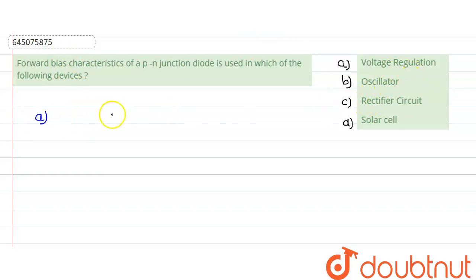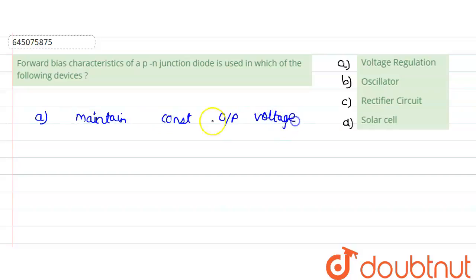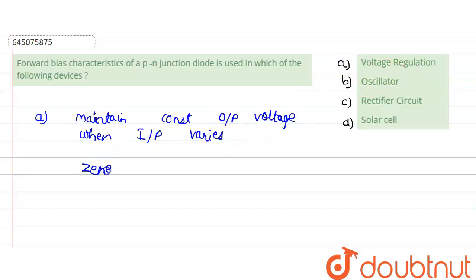Voltage regulation — from the word itself it is clear that it would be required to maintain a constant output voltage when the input voltage or input power varies. Now this voltage regulation uses a Zener diode, and Zener diode is based on reverse bias. So this is wrong — voltage regulation is not based on forward bias but on reverse bias, because it employs a Zener diode.